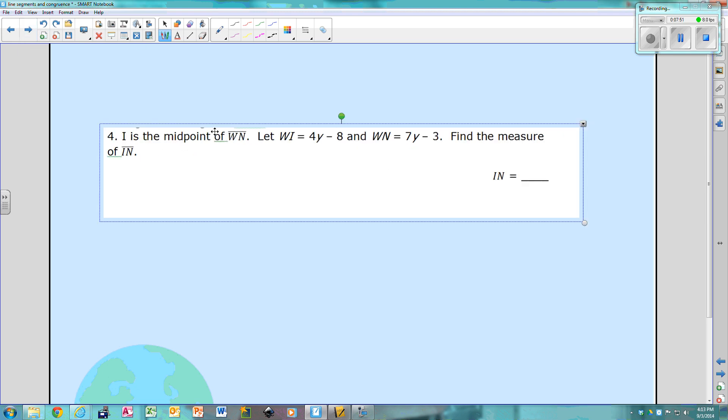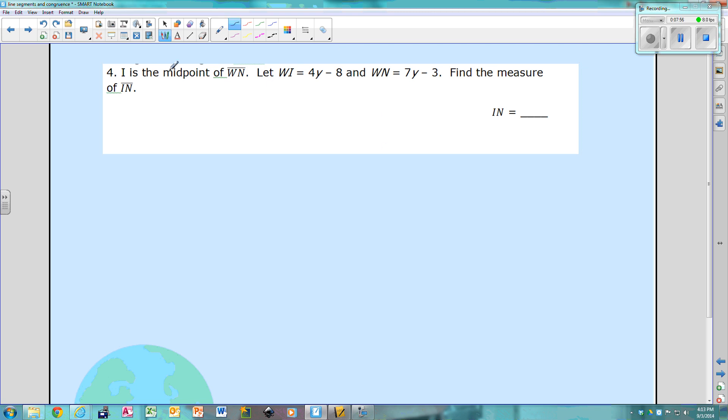All right, number 4. If I is the midpoint of WN, so think about what that looks like. I is the midpoint of WN, so you're going to have segment WN. So let me draw segment WN. I know I'm cheating. So WN, and if y'all see how horrible I write, you see why I cheat. So I is the midpoint, because it says I is the midpoint, so I need to put I in the middle. That means WI is congruent to IN. Okay, so if WI is 4Y minus 8, so 4Y minus 8, and WN, which is the whole thing, is 7Y minus 3, they want me to find this piece. Well, what do I know about this piece? I know that it's equal to this piece. So since they didn't tell me what it was equal to, then I'm going to share this label with this side, because they are equal.